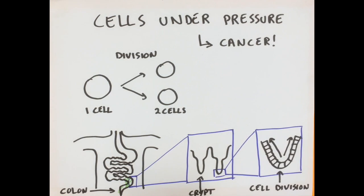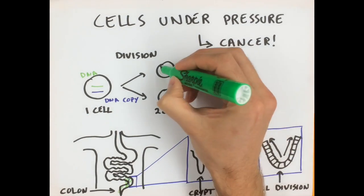Before a cell can divide, it has to copy its genetic material, the DNA, and give one copy to each new cell.